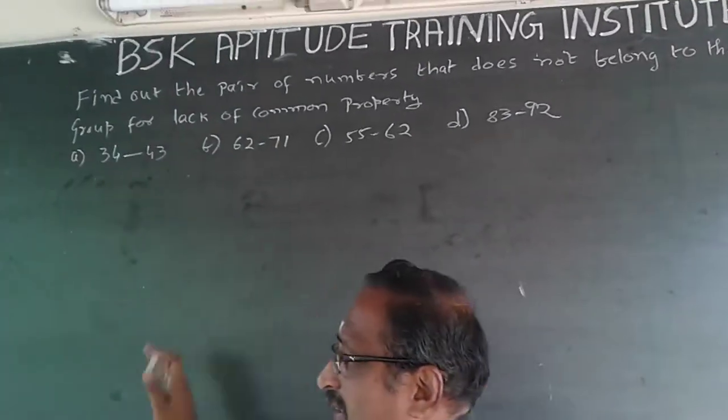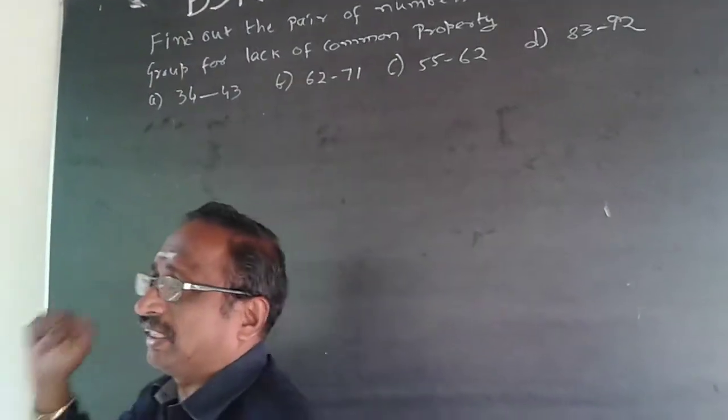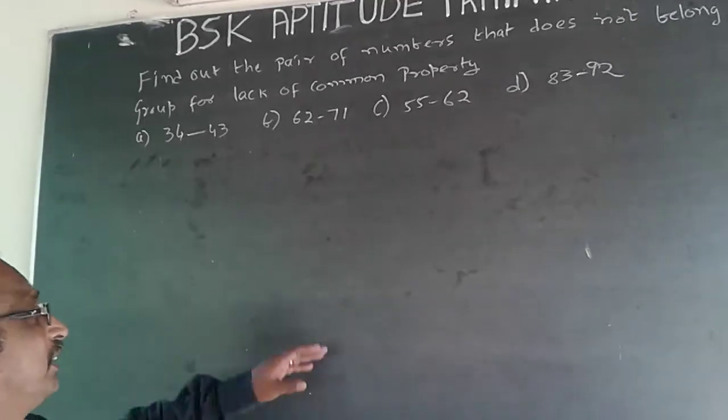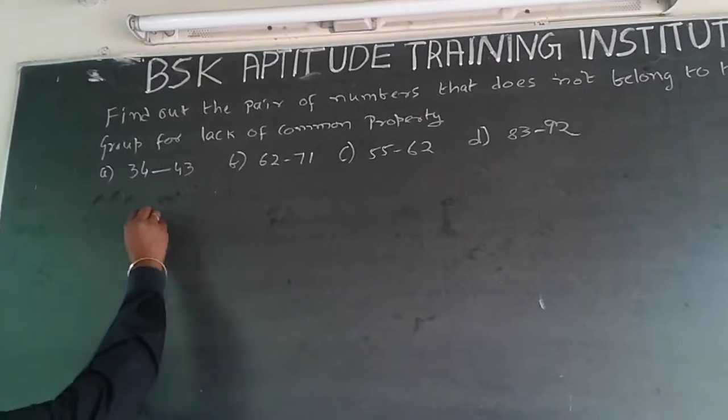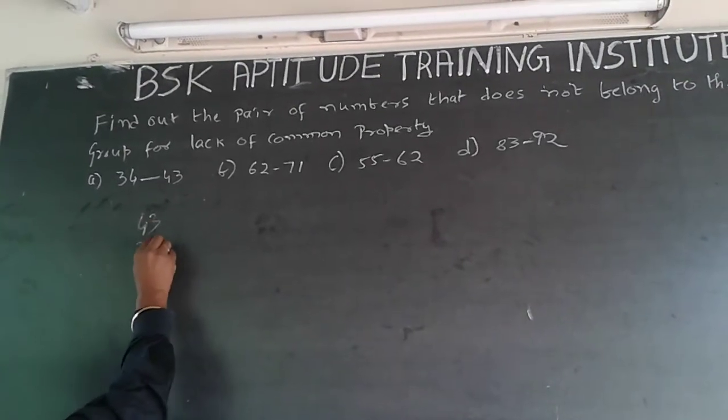So, just by seeing it, you can give the answer. See here, 34, 43. What is the difference? 43 minus 34 will be 9.